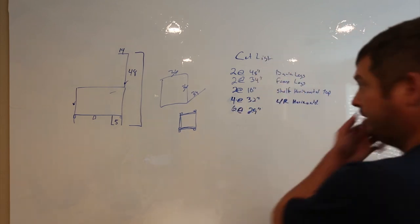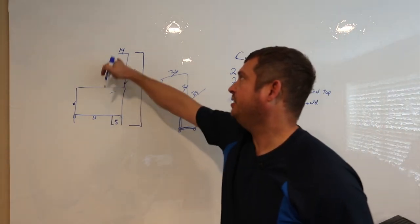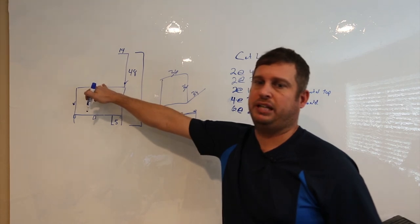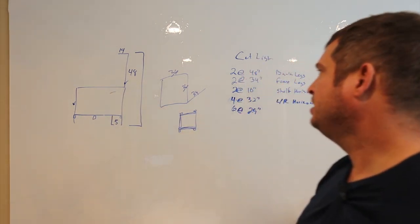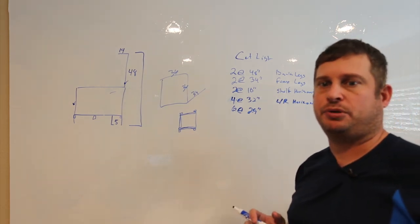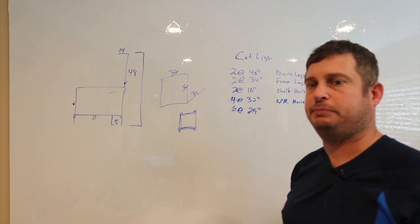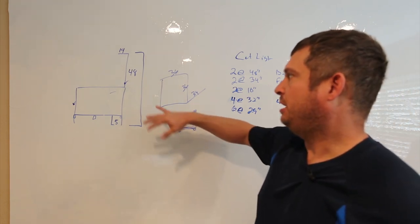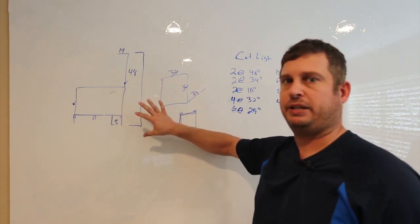So six at 29. That's my cut list. And then I've got MDF here, here, and then this will be plywood. That's just how I always build my tables. That's really all there is to the planning of this table. So what I'll do now is I'll shoot another video showing how to build this table, and you can modify the dimensions to suit your application.